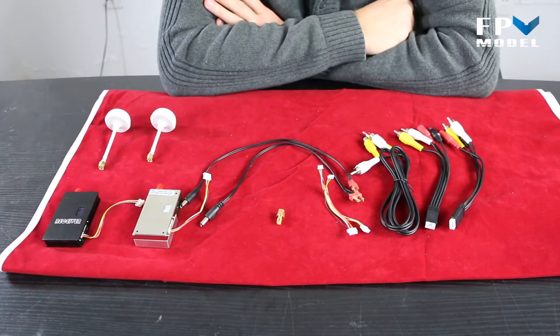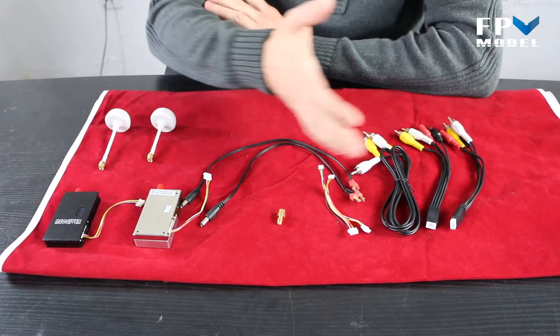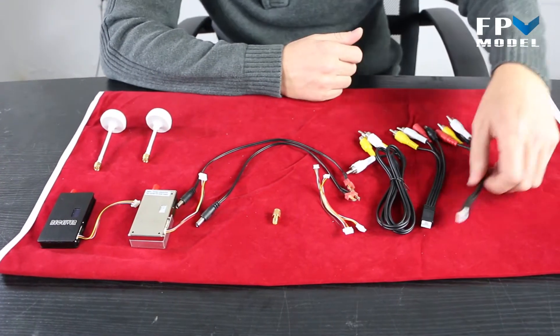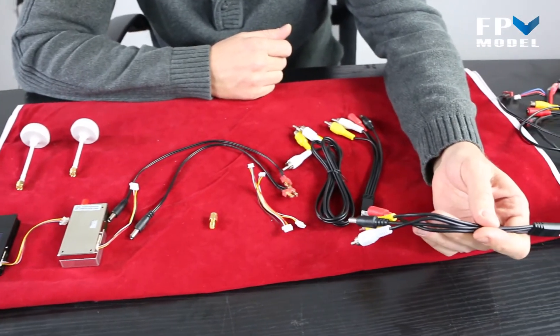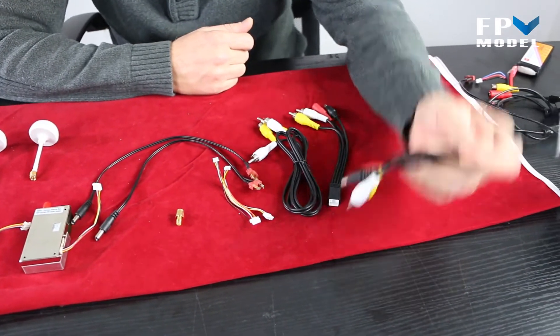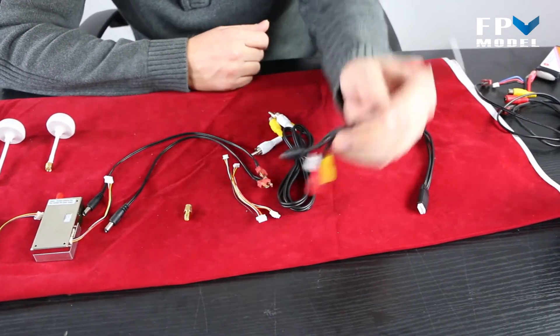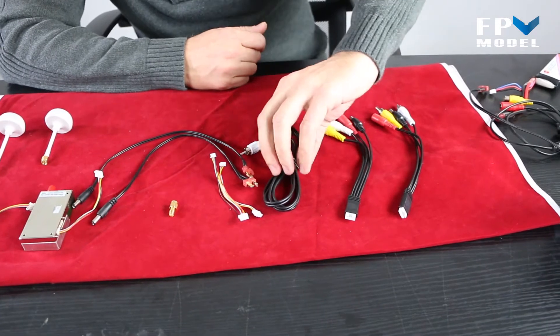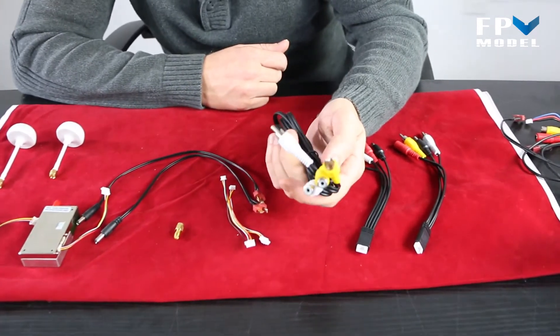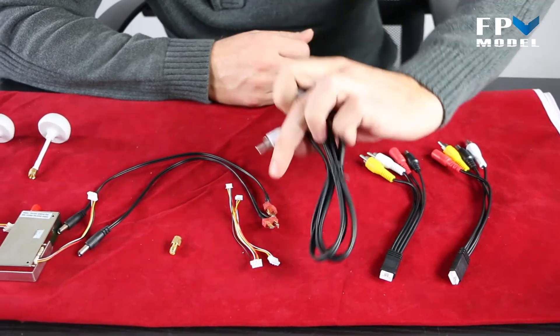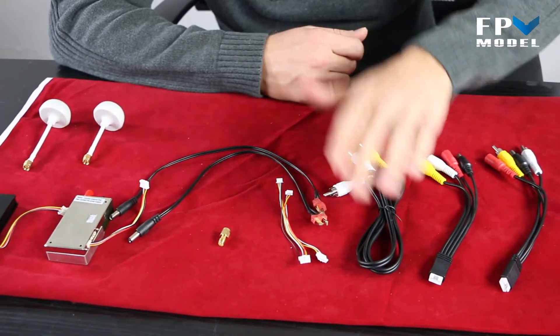First thing, whenever you open the package, these are all of the parts that you're going to get. You have your audio video cables for your transmitter and you also have your audio and video cables for your receiver. You will receive an audio and video cable that is extra in the package that can be used to connect to different monitors.